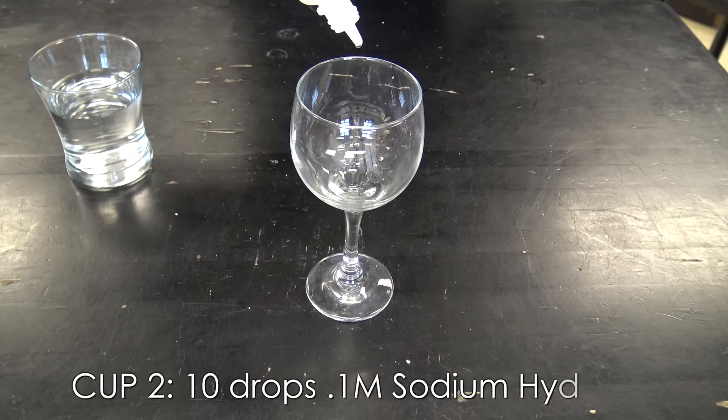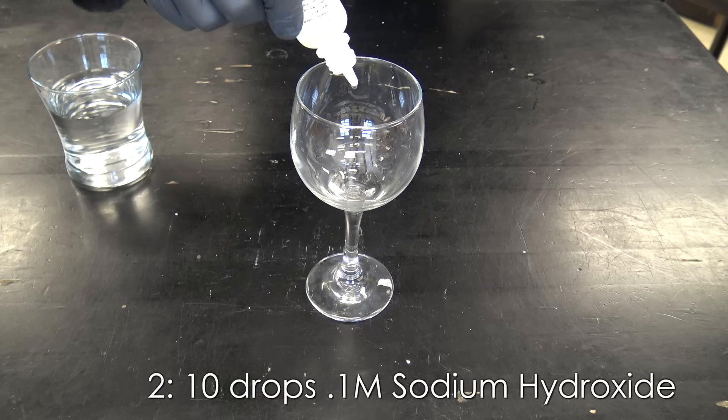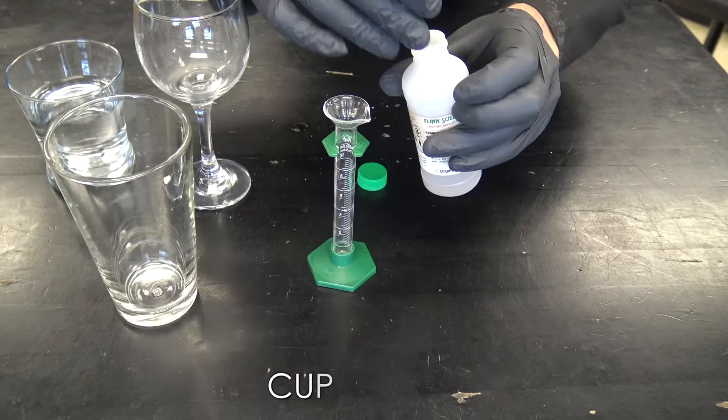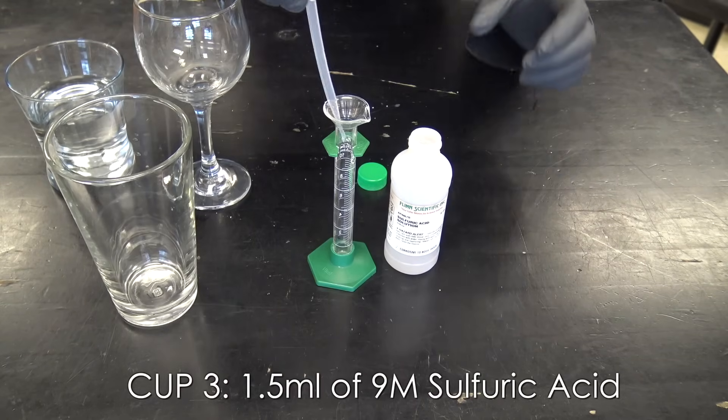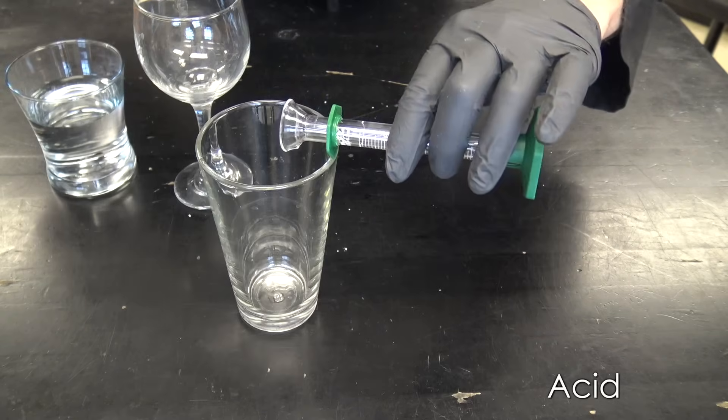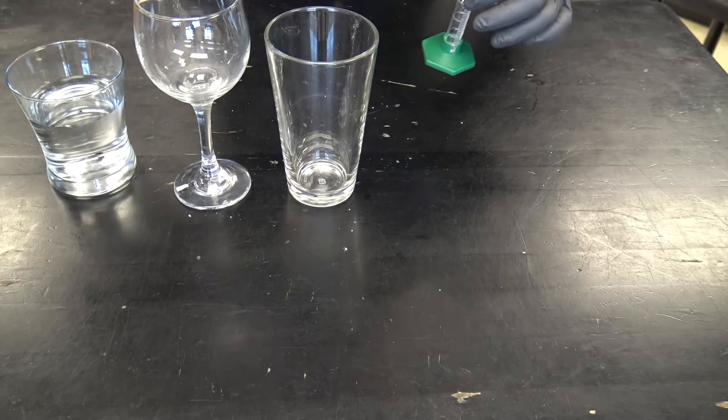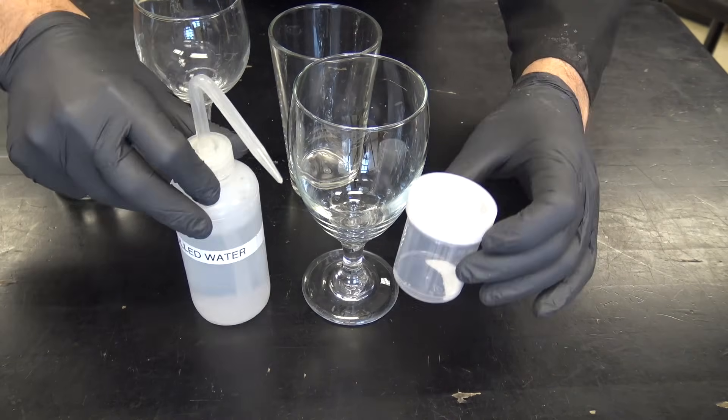For cup number two, we need to change the pH. So we're going to use 10 drops of 0.1 molar sodium hydroxide. That molarity tells us how strong it is. In cup three, 1.5 milliliters of nine molar sulfuric acid. This is pretty strong sulfuric acid. One of the reasons I'm wearing gloves to mix these.